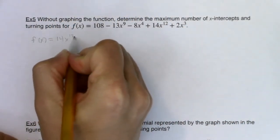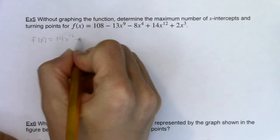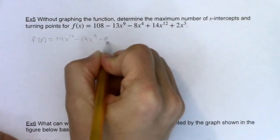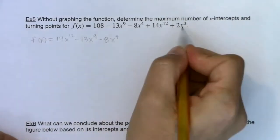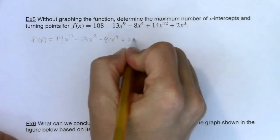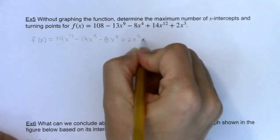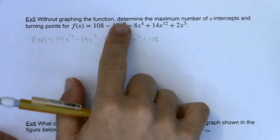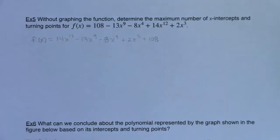So 14x to the 12th minus 13x to the 9th minus 8x to the 4th plus 2x cubed plus 108. Let me just count, yeah, I just want to make sure I got all five terms.